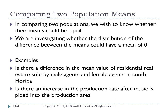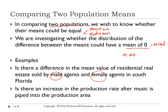Two-sample tests of hypothesis compares two population means. For instance, if we want to compare plumbers and electricians, we want to know whether their means are equal — in other words, whether the distribution of the difference between the means has a mean of zero. A mean of zero means the means are equal; if the mean is not zero, the means are different. Examples include comparing male versus female, or production rates before and after music.